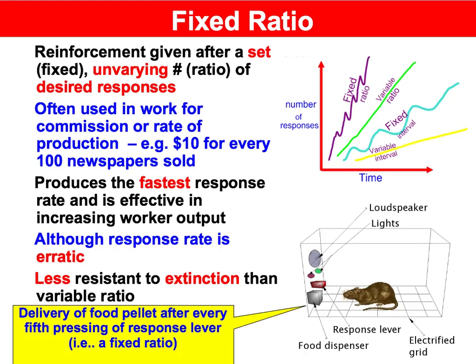For the four partial schedules of reinforcement, you need to be able to tick four boxes. Firstly, you need to be able to define it. Secondly, you need to be able to identify it from a scenario given. Thirdly, you need to be able to describe the rate of response, whether it's rapid or slow. And fourthly, you need to be able to describe the nature of the response in terms of whether it is erratic or stable.